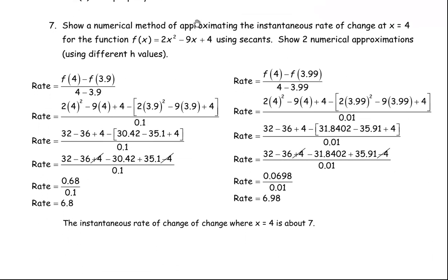In question number 7, we're asked to show a numerical method of approximating the instantaneous rate of change at x equals 4 for the given function, using secants with two different h values. To approximate the instantaneous rate, we want the two x values to be quite close together. Using 4 and 3.9 as x coordinates: we find f(4) by putting 4 in place of x — 2 times 4 squared minus 9 times 4 plus 4. Minus f(3.9) in square brackets, putting 3.9 in for x.